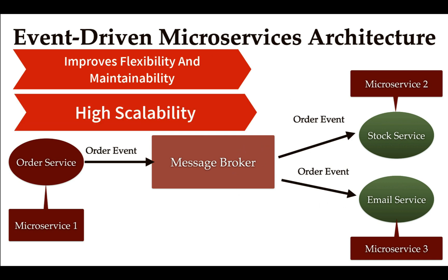If you need to add one more microservice to the architecture, you simply create a new microservice similar to the stock service or email service, and start consuming events from the message broker — you don't have to worry about the publisher. This is scalability in event-driven microservice architecture: it gives you the flexibility to scale by creating as many microservices as you want.